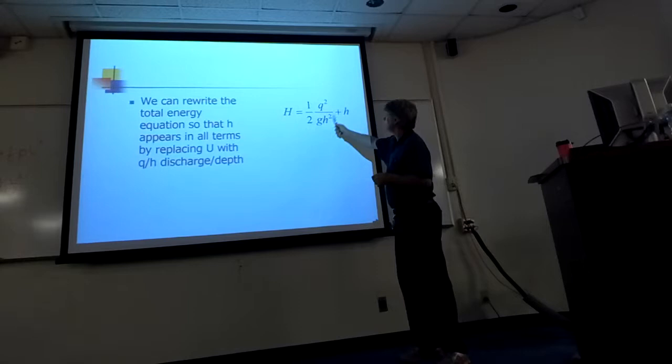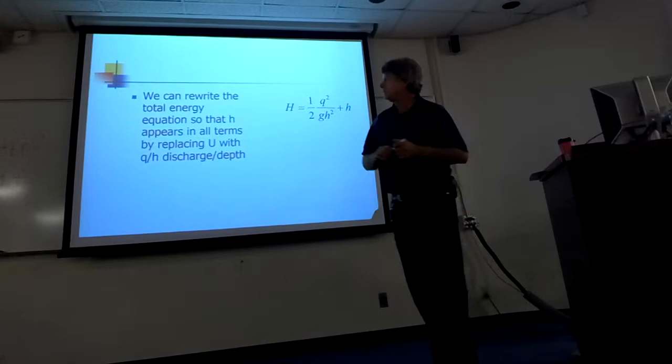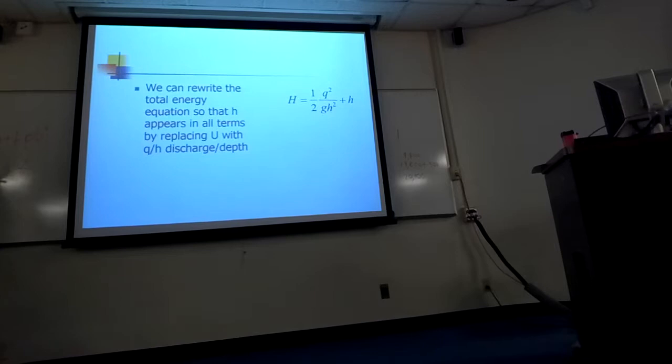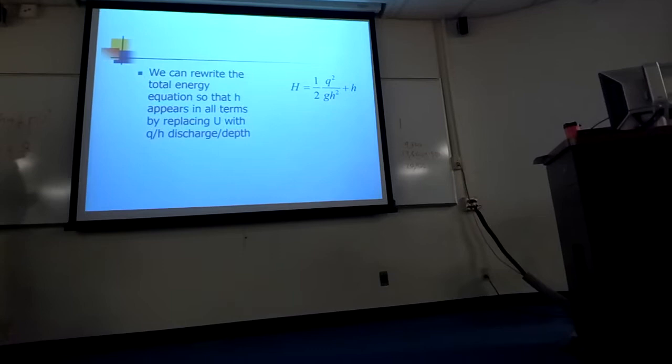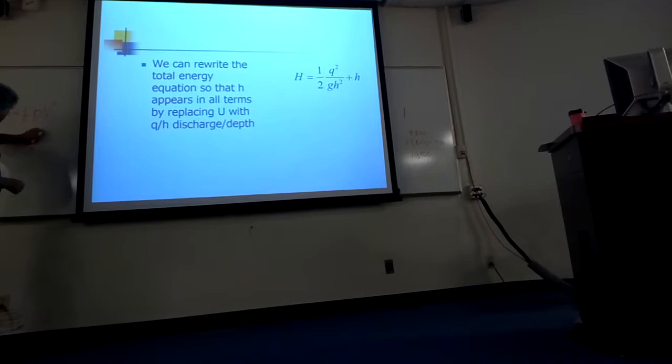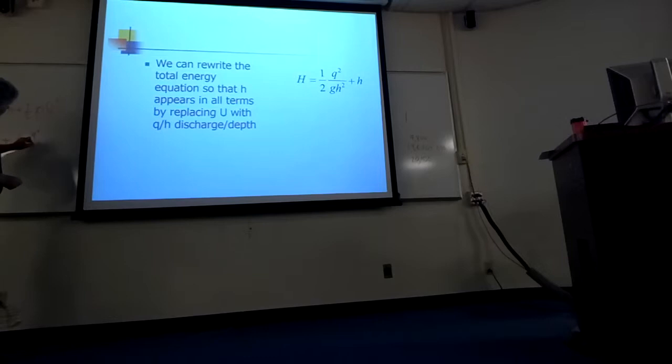And we're doing that because, notice what I've done here? Now I have everything that has an h in it. So, if we take our equation, so depth plus one-half velocity squared over gravity, and we replace velocity squared with discharge, the unit discharge of the stream, I'd better use a small q, because that's what we do there.